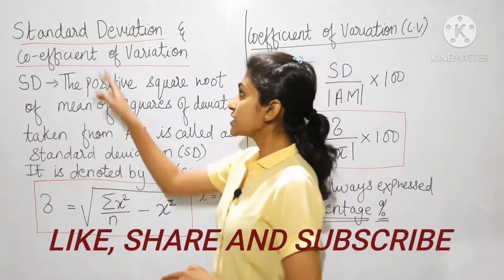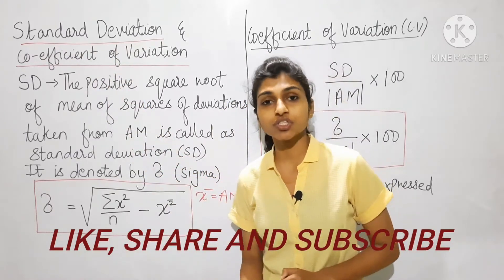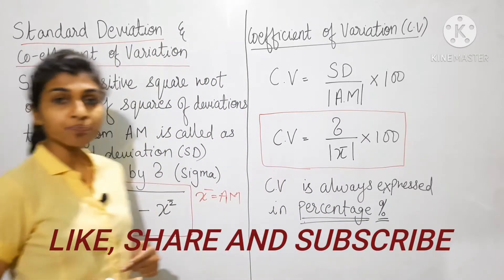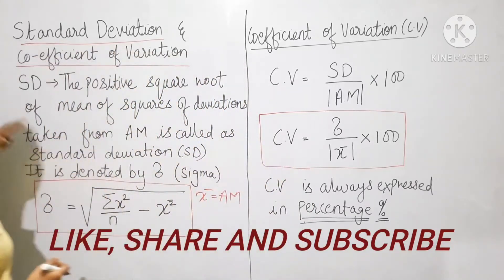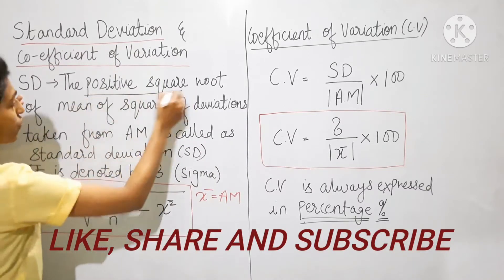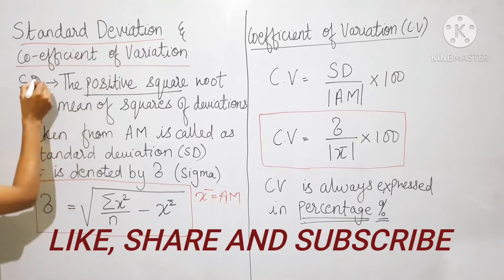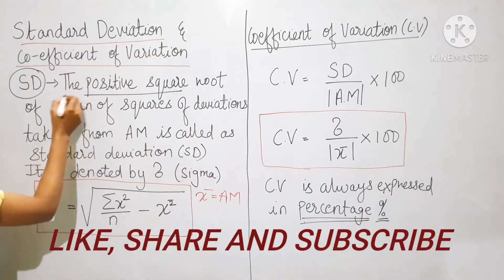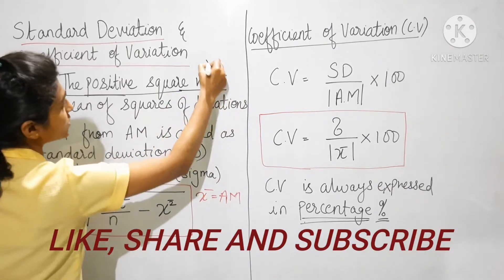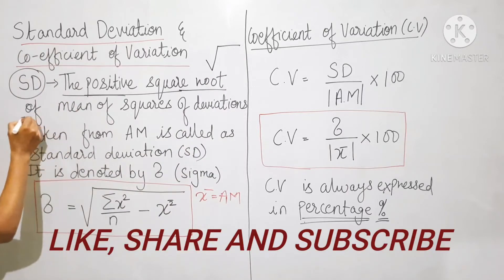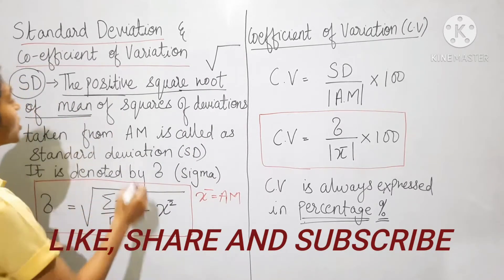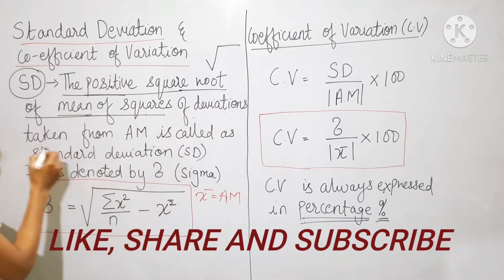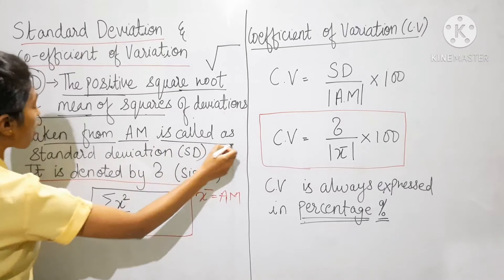In today's lecture, we are going to see standard deviation and coefficient of variation — the formula and one example. So, what is standard deviation? Standard deviation is a measure of dispersion. Standard deviation, in short, can be called SD — S means standard and D means deviation. SD is the positive square root of mean of squares of deviation taken from arithmetic mean, and it is called standard deviation.